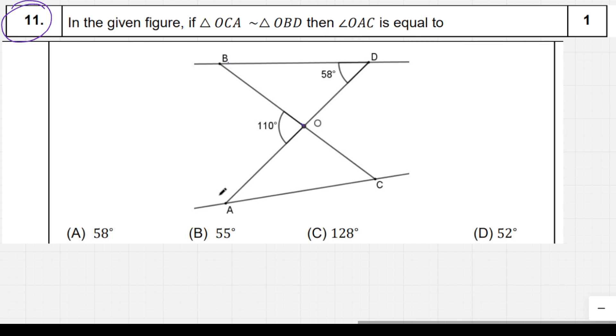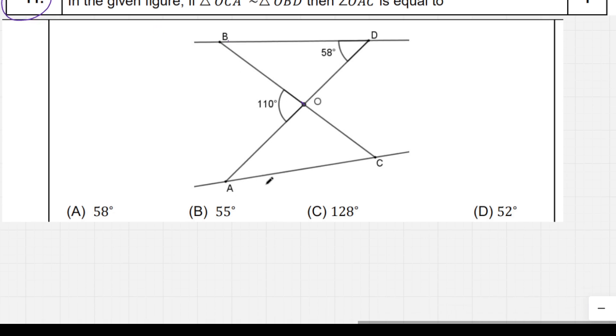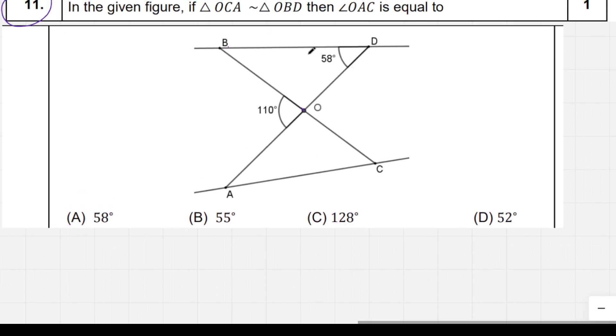Since the two triangles are similar, the corresponding angles are equal. So angle D equals angle C. And since angle D is 58 degrees, then angle C is also 58 degrees.